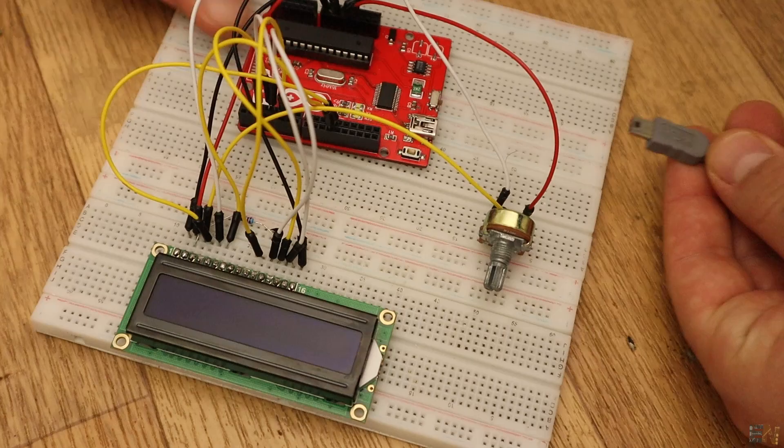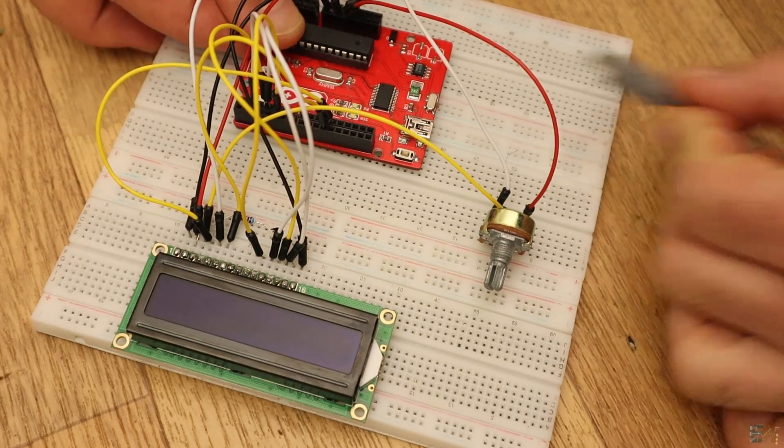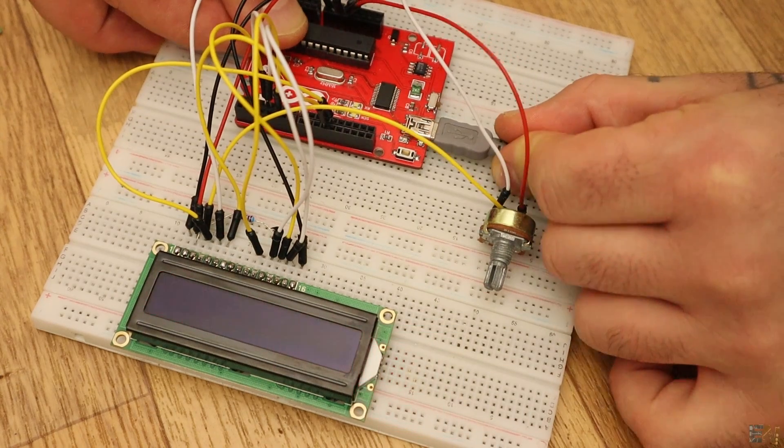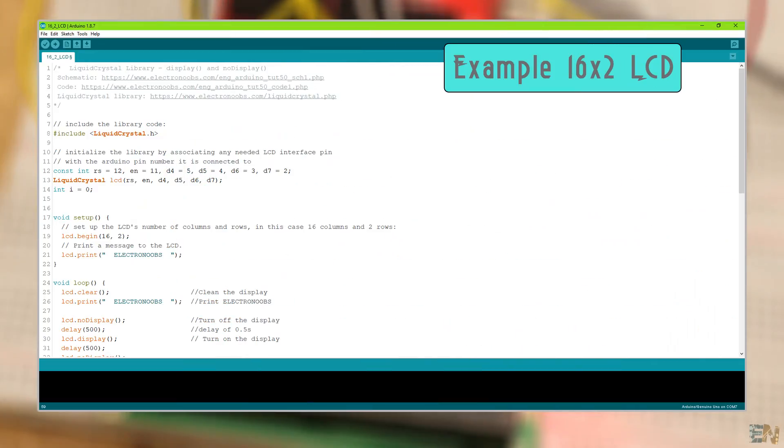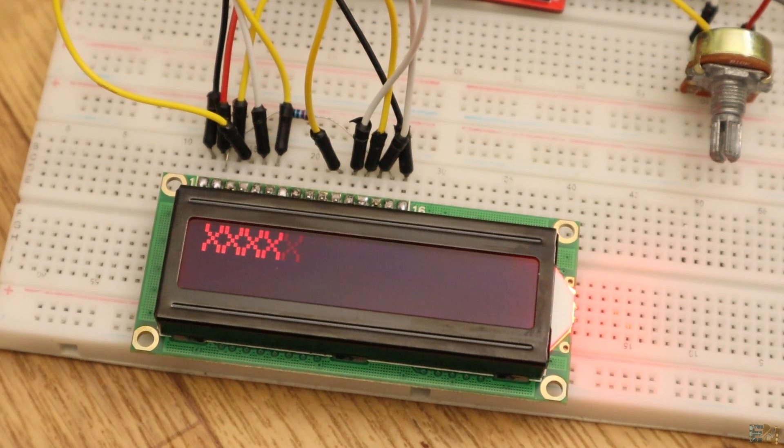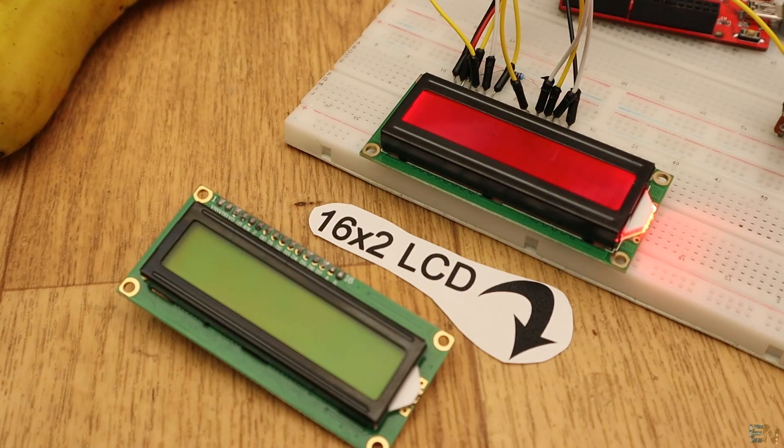Now, go and download the first example code for this video called example 16 by 2 LCD. It will be a very long video if I explain each display step by step. That's why for each example you have a full schematic, the code and the libraries that you need below in the description.